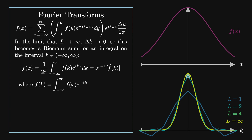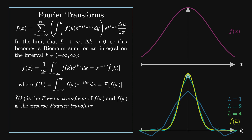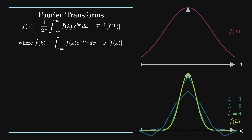f of x equals 1 over 2 pi times the integral from minus infinity to infinity of f-hat of k times e to the i k x dk, where f-hat of k is the Fourier transform of f of x and f of x is the inverse Fourier transform of f-hat of k. There are many different conventions for the Fourier transform, so whichever one you pick, please be consistent. A particularly common one uses 1 over root 2 pi as a prefactor for both integrals in order to make them more symmetric.